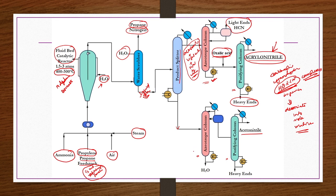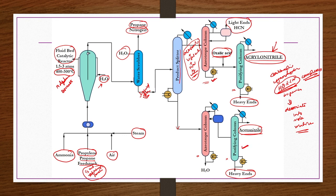At the bottom of the product stripper, the mixture primarily contains acetonitrile with heavy impurities and water. This is taken to an azeotropic column where the lighter acetonitrile is collected as the top product, while much heavier impurities are collected as the bottom product. Temperature and pressure are maintained appropriately for this separation. So from this process you get not only acrylonitrile but also the co-product acetonitrile.